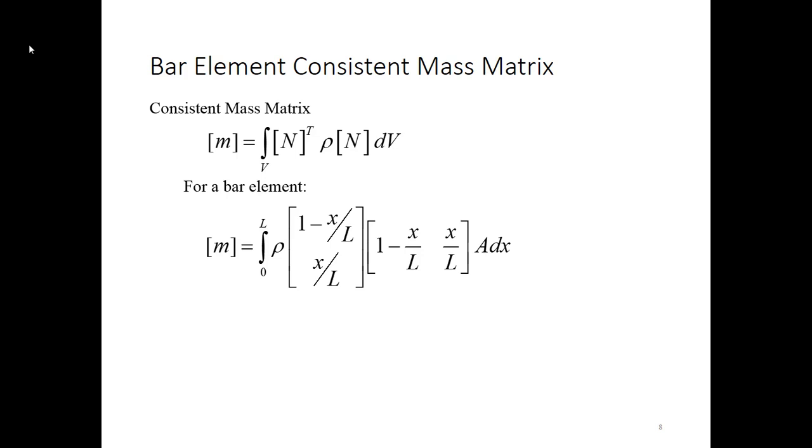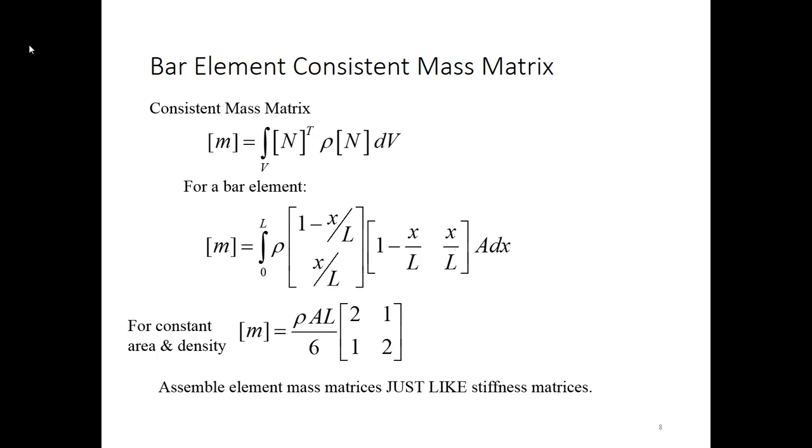For a bar element, if we plug in what those shape function matrices are, again, remember that's 1 minus x over L and x over L, and then we multiply those out, I'm also going to convert dV to ADX. If I then assume that my cross-sectional area is constant and my density is constant so I can take them out of the integral, then this becomes the consistent mass matrix for the bar element. The assembly process works exactly the same way as stiffness matrices, so if you're doing it by hand, you would identify the row and the column, which degrees of freedom they're associated with, and you put them together to assemble. Same process.